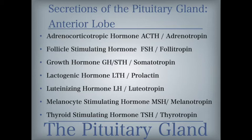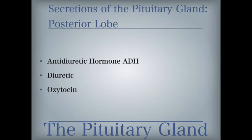The melanocyte-stimulating hormone, also known as melanotropin, increases pigmentation of the skin. The thyroid-stimulating hormone, also known as thyrotropin, stimulates the growth and secretions of the thyroid gland. Secretions from the posterior lobe include the antidiuretic hormone, which maintains the water balance within the body by promoting the reabsorption of water through the kidneys. When more ADH is secreted, less urine is produced; when a diuretic is administered, urine secretion increases. Oxytocin stimulates uterine contractions during childbirth and afterward stimulates the flow of milk from the mammary glands.